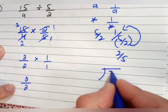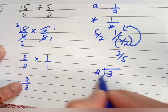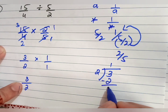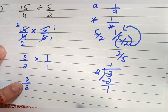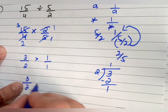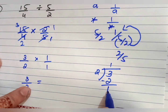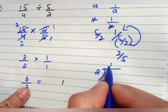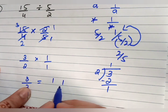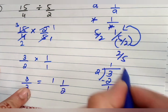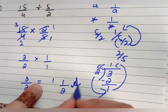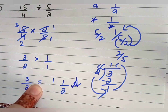Divide 3 by 2: 2 ones are 2, 3 minus 2 equals 1 remainder. Write in mixed form: quotient is 1, remainder is 1, divisor is 2. So 1 and one-half is your answer for Part C.